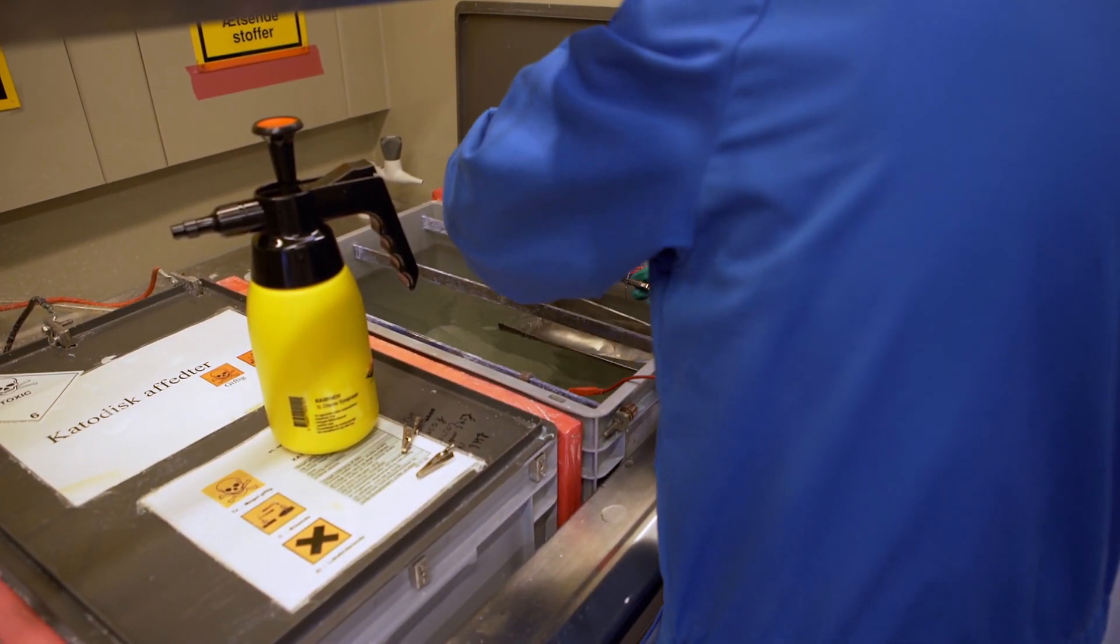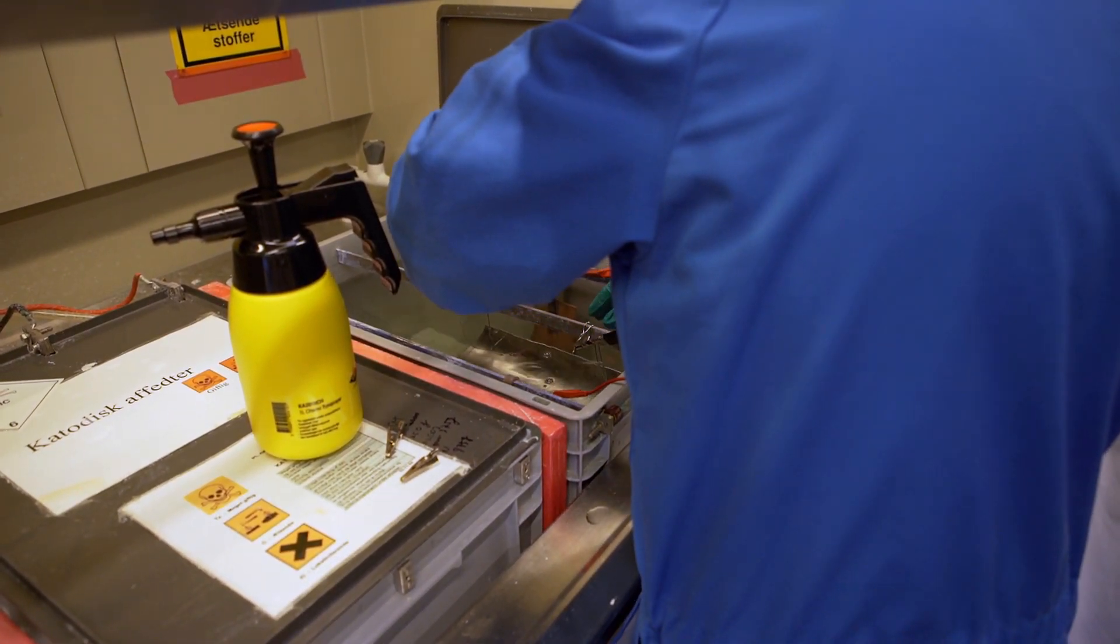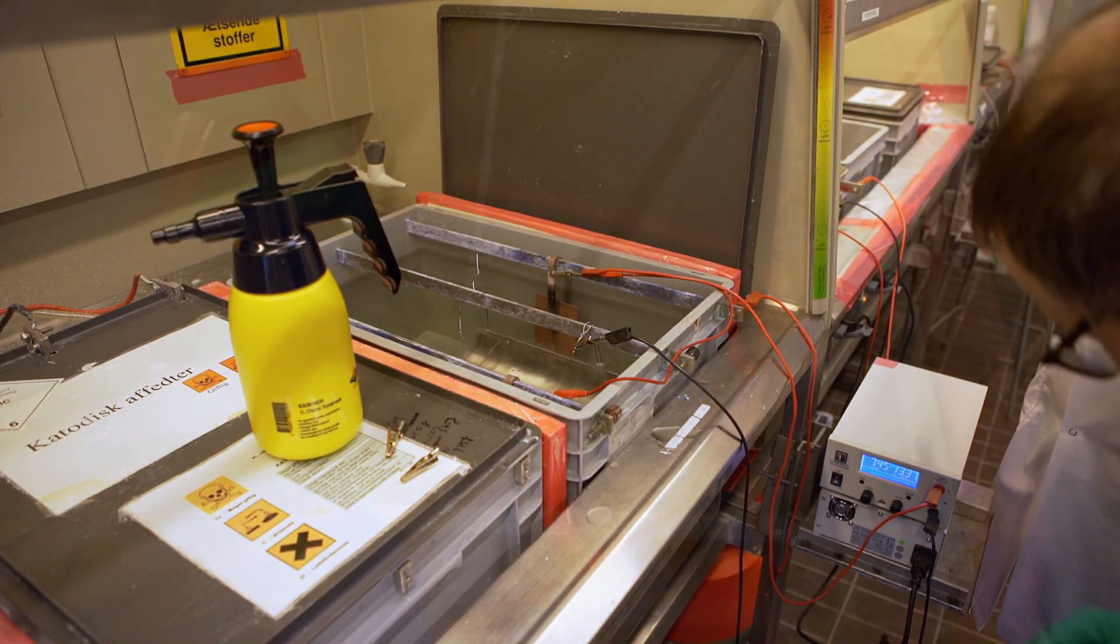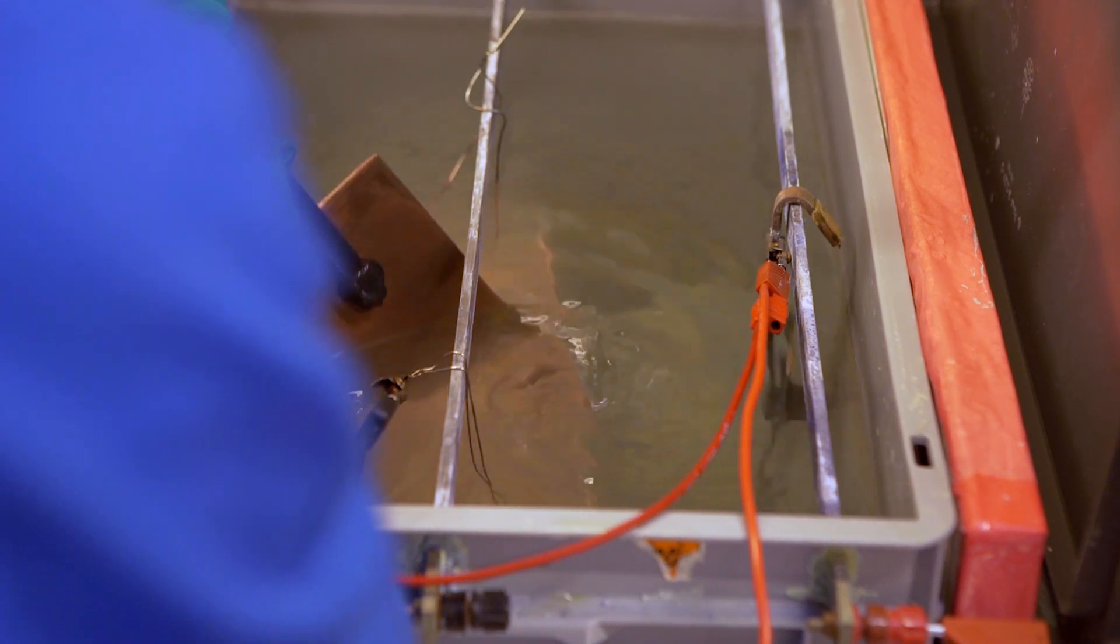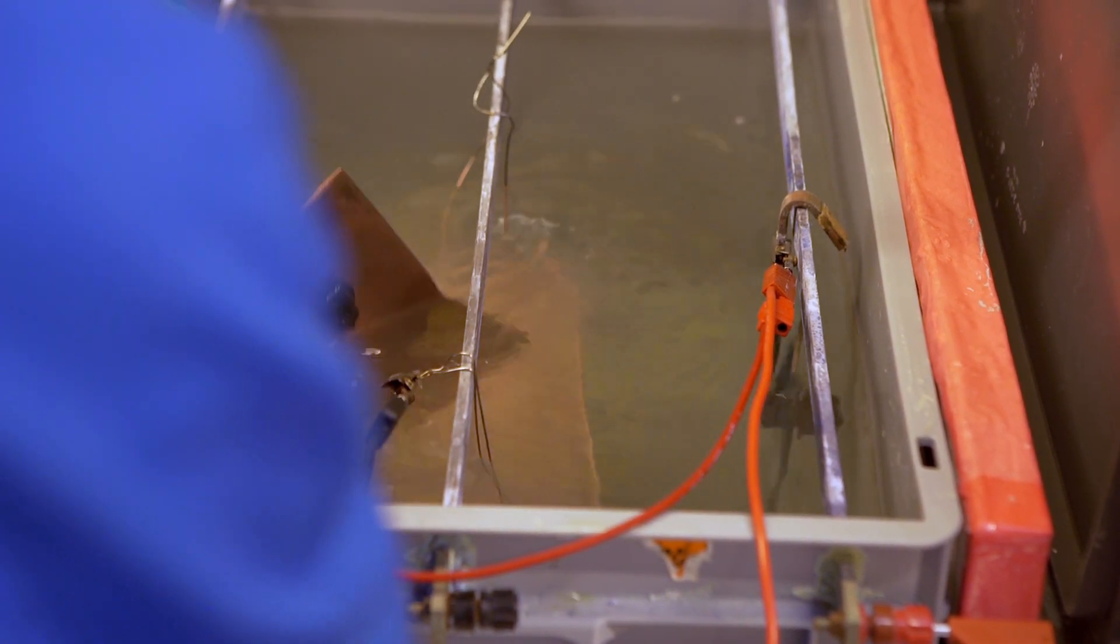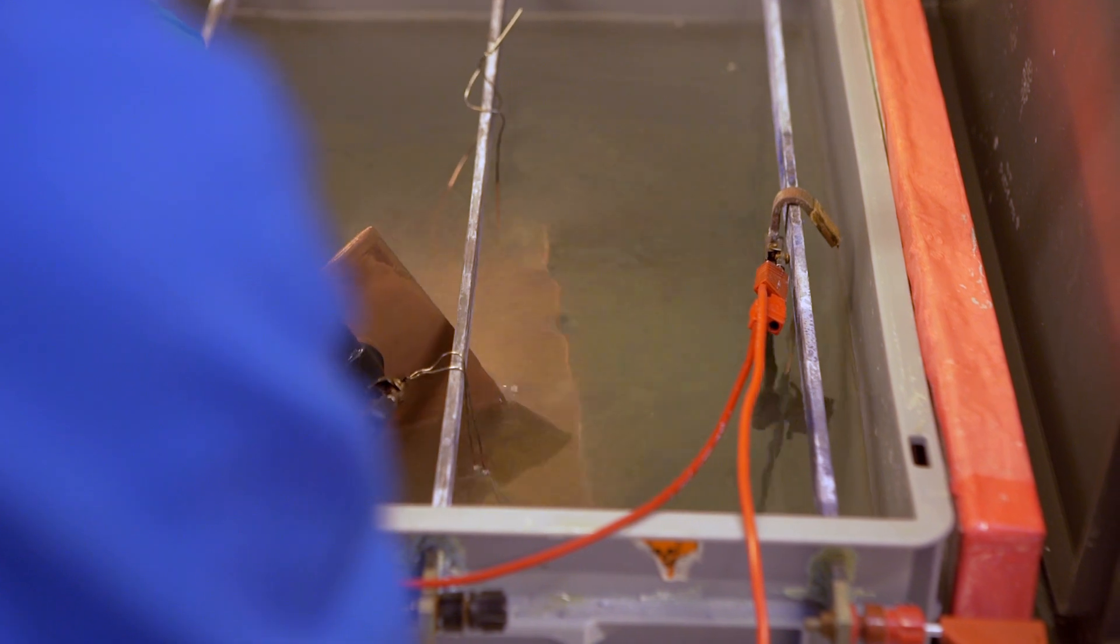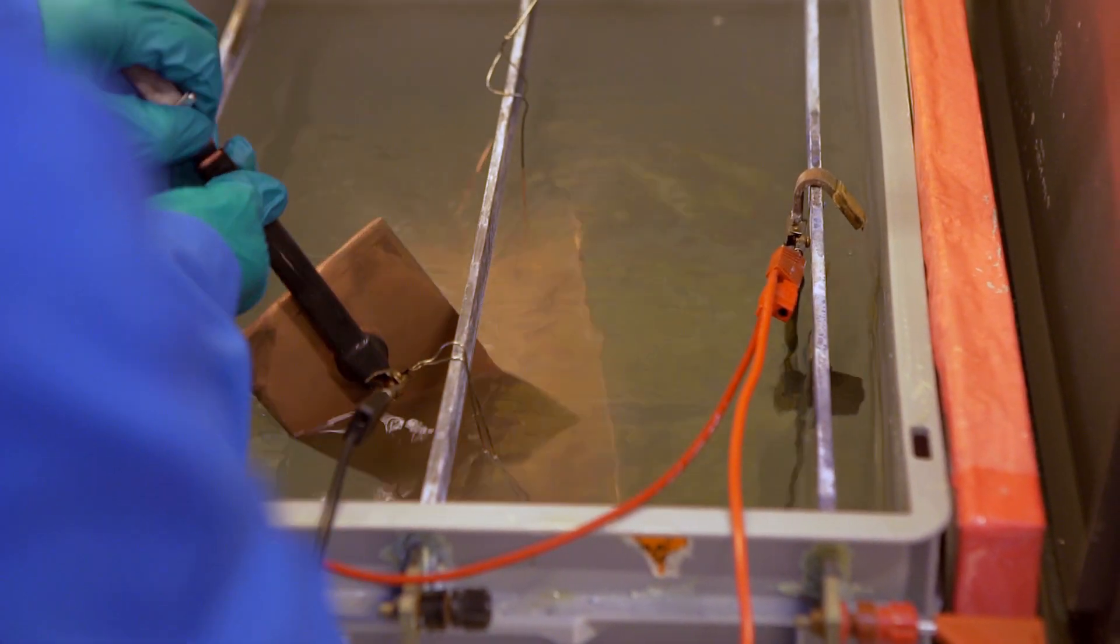To ensure the best possible adhesion of nickel to our parts, we actually deposit a thin layer of copper first. The actual thickness of the copper layer is not really important, but here you see Christian moving the anode back and forth along the part to ensure it gets a good coating.